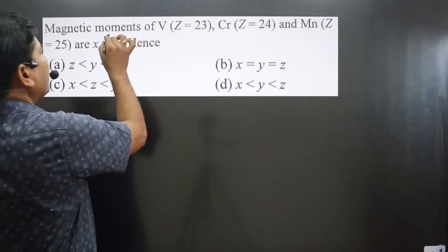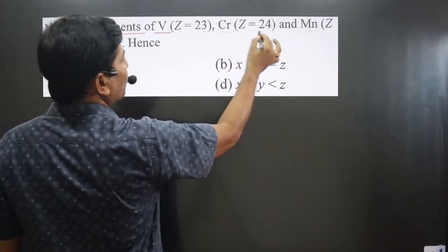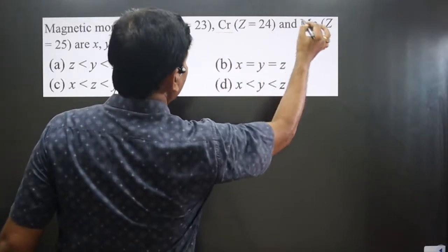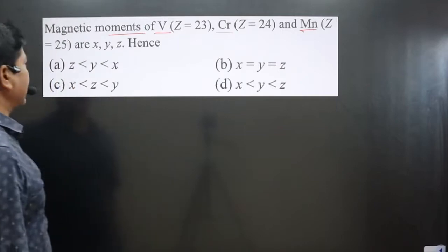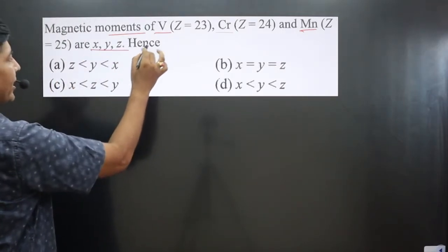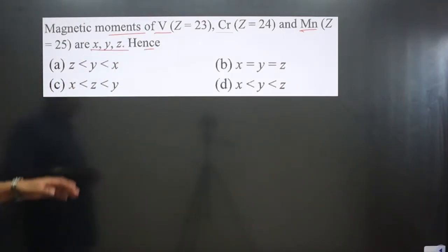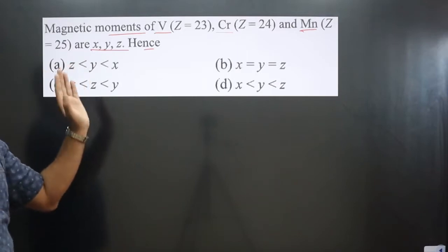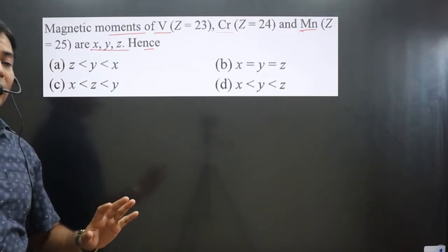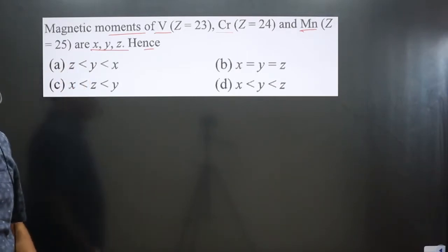The question says magnetic moments of vanadium, chromium, and manganese are x, y, and z respectively. We need to determine the order — whether their magnetic moments are equal to, greater than, or smaller than each other. We have to compare them.